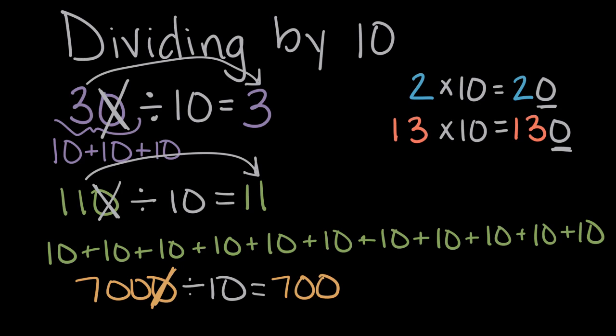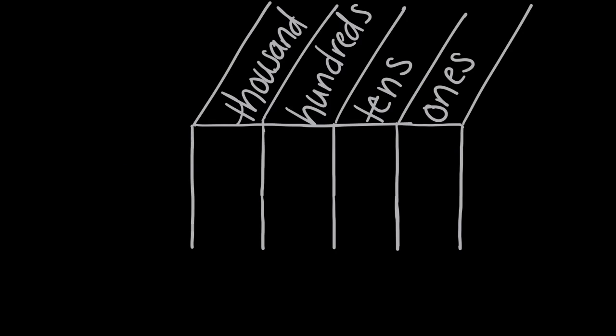Let's take this all a step further and let's think about what dividing by 10 is doing to these numbers, to 30, to 110, to 7,000, in terms of their place value. So here's a place value chart. Let's use it to look at one of the numbers we already tried, something like 30.